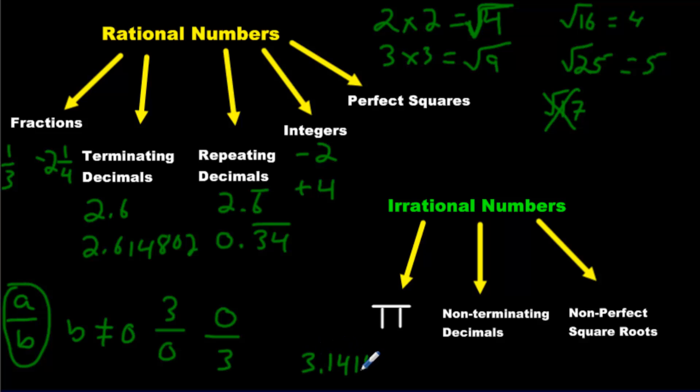It's 3.1415926, and it goes on forever and ever and ever. You cannot write this in a fractional format like this. So it is an irrational expression.